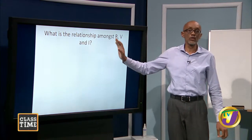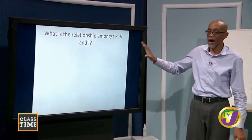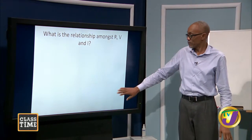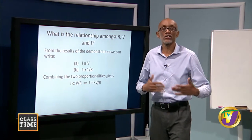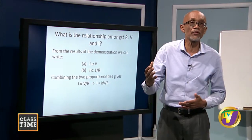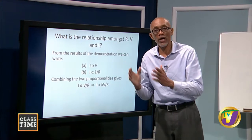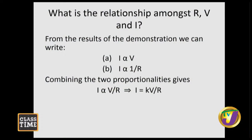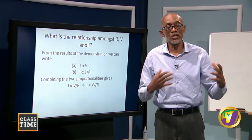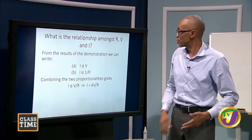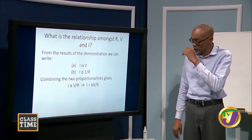We want to establish a relationship among R, V, and I. From the results of the demonstration, we can write that current is proportional to voltage — increased voltage gives increased current, a direct proportionality. We can also write that current is inversely proportional to R. When we increase the resistance, the current goes down; decrease R and the current will increase. So there is an inverse proportional relationship.